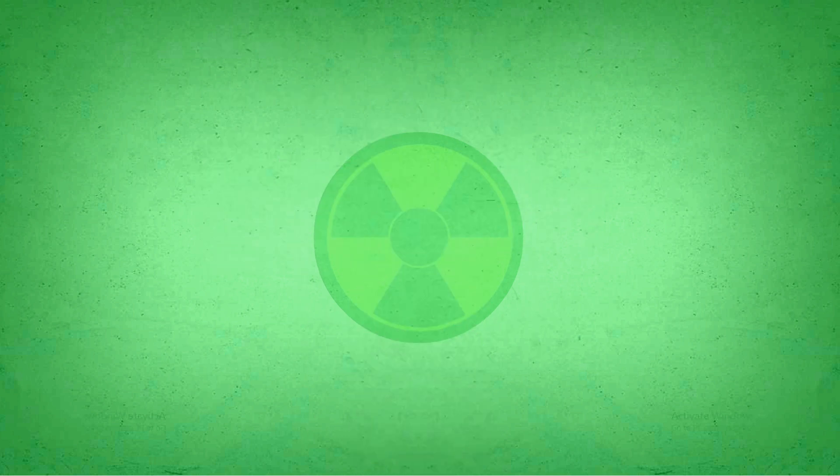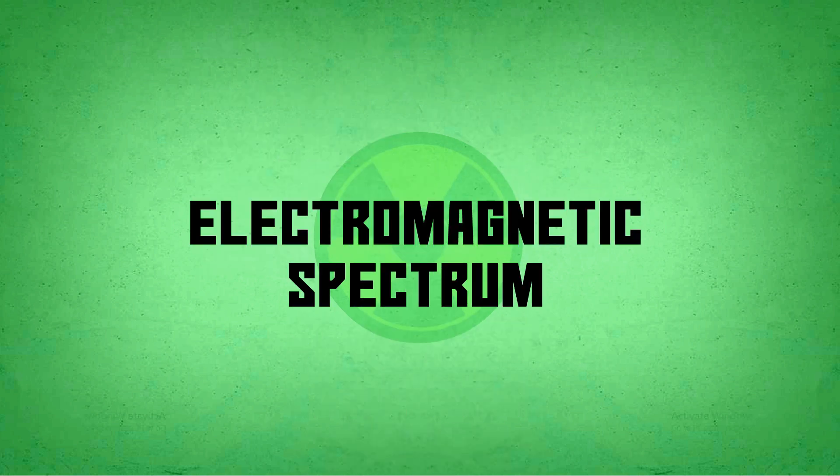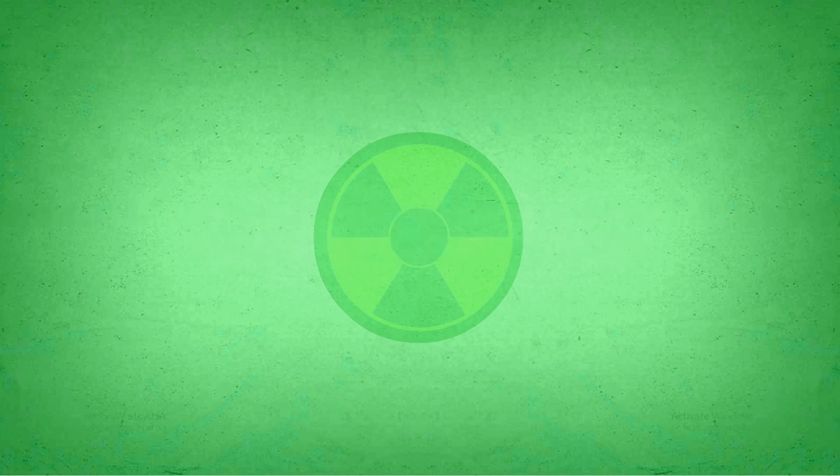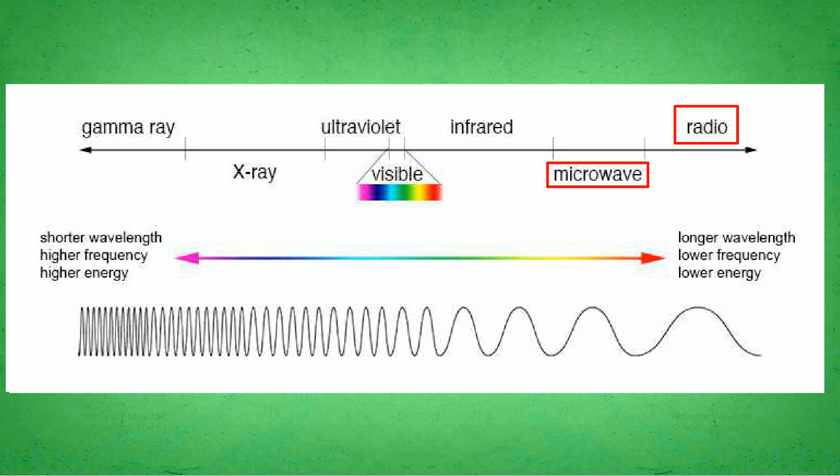First, you need to know about electromagnetic spectrum, which means the range of wavelengths or frequencies over which electromagnetic radiation extends. It consists of radio waves, infrared, visible spectrum, ultraviolet, X-rays, and gamma rays.